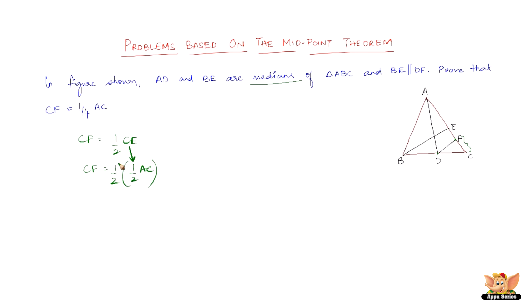CE is half of AC. So now we have CF is equal to one-fourth of AC. Hence we proved. The main point used to solve this problem is the midpoint theorem and the converse of it. This completes the problem.